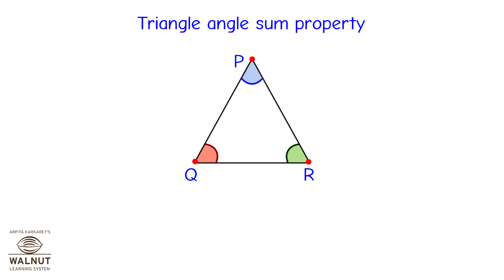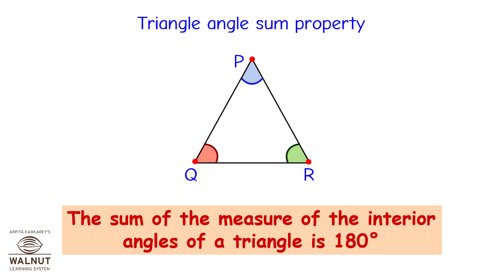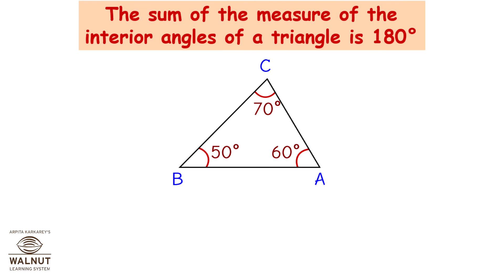Triangle Angle Sum Property: The sum of the measure of the interior angles of a triangle is 180 degrees.